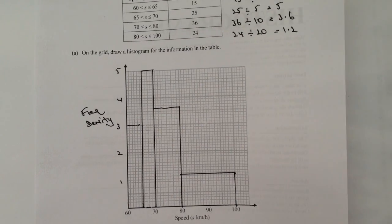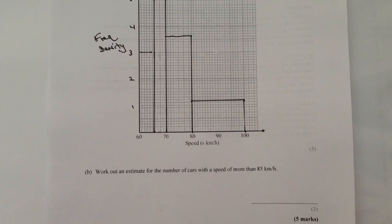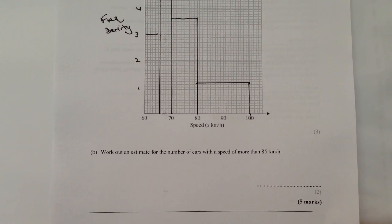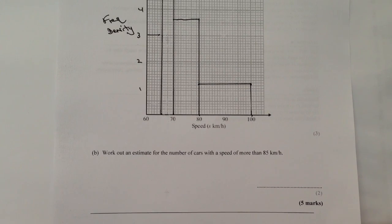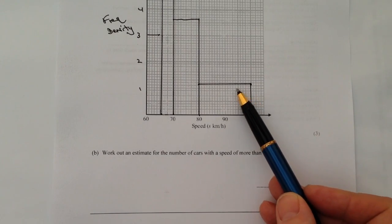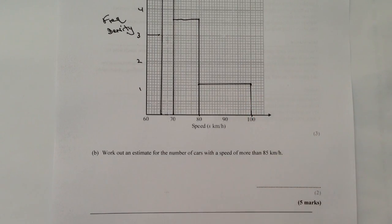Then the final thing is it asks you to work out an estimate for the number of cars with a speed of more than 85 kilometers per hour. That's just what happens with these sorts of questions. So really what we're looking to do is to effectively work out this area which is more than 85.